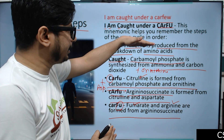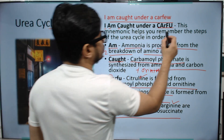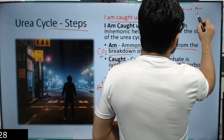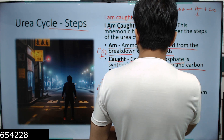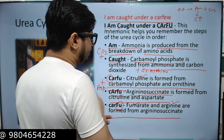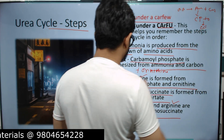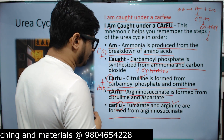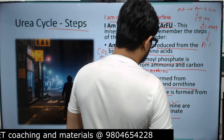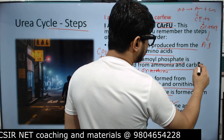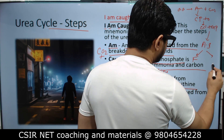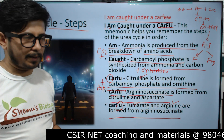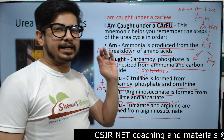To summarize the steps: Amino acids are converted to Ammonia; Ammonia and CO2 are converted to Carbamyl Phosphate; Carbamyl Phosphate along with Ornithine produces Citrulline; Citrulline along with Aspartate produces Argininosuccinate; Argininosuccinate breaks down into Fumarate and Arginine. These are the steps of the urea cycle — easily remembered with 'I Am Caught Under A Curfew.'